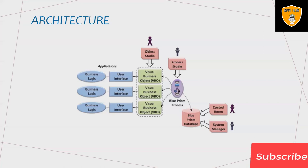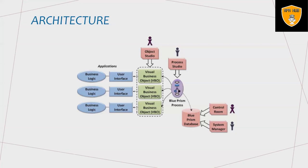In Process Studio, actions are put in a defined sequence controlled in the process layer hierarchy. It is possible to put control loops, business logic, and object calls in a defined sequence, and they can be tested in a flow visible to the user at all times. The second component is Object Studio, which is comprised of visual business objects and is an important tool for software elements in Blue Prism.